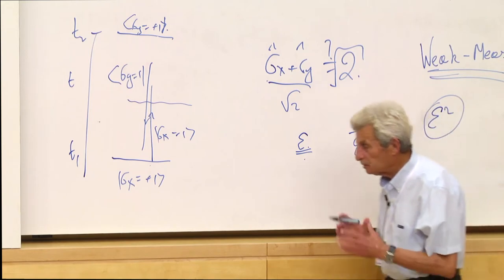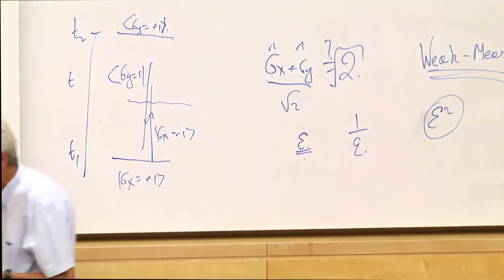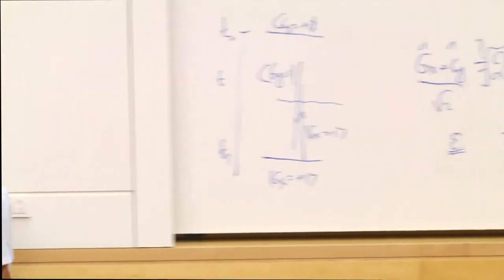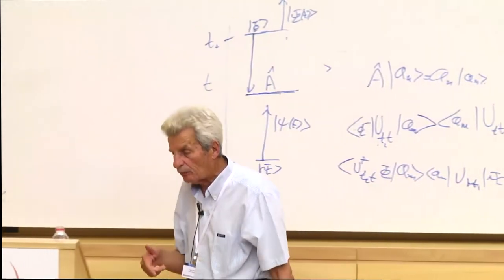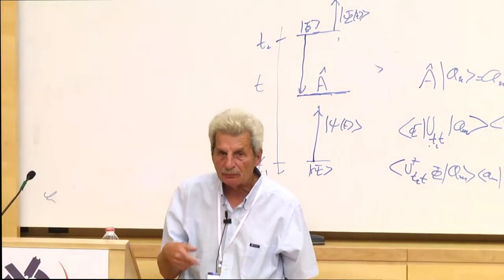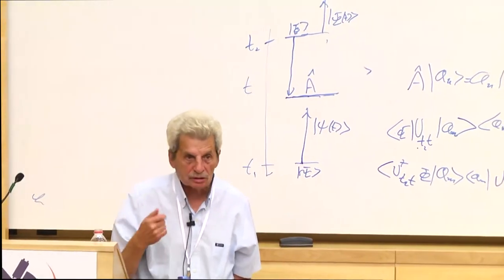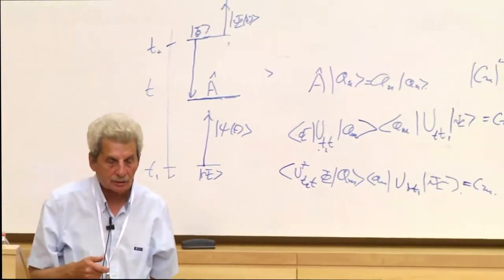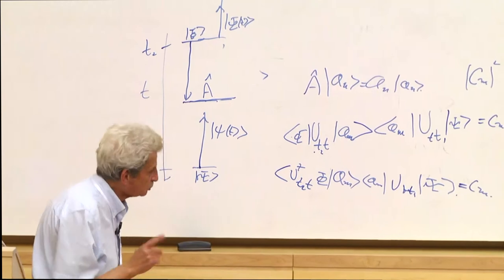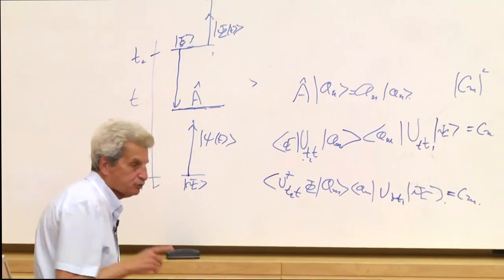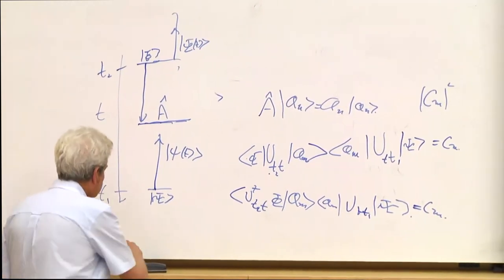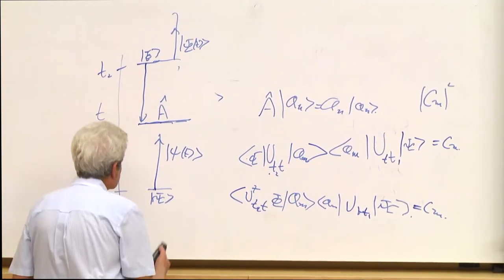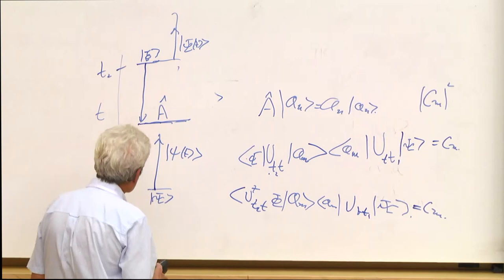That means that if epsilon is very small, I can collect information from all the particles without disturbing even one of them. This is very important because always in quantum mechanics we see that a measurement giving you information must also give disturbance — but this is not the case if you have an ensemble of particles.